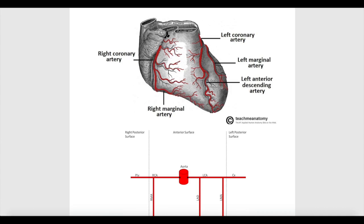The right coronary artery, after it arises from the aorta, will run in a sulcus or groove between the right atrium and the right ventricle. This groove or sulcus is called the anterior atrioventricular sulcus because it's found between the atrium and the ventricle. The right coronary artery will keep running in this sulcus until it reaches the right margin of the heart.